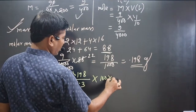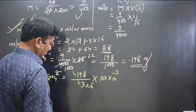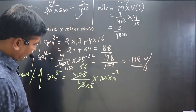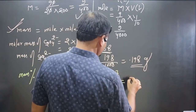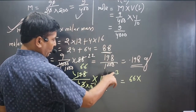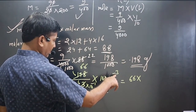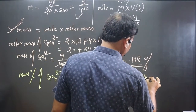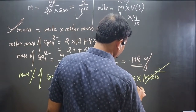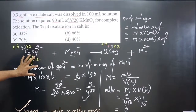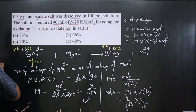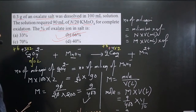Simplifying: 0.198/0.3 × 100. Removing decimals: 198/300 × 100 = 66%. The mass percentage of oxalate ion in the given salt is 66%, which corresponds to option B. So the answer is 66%.